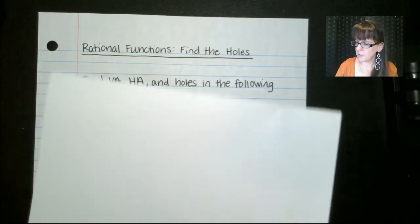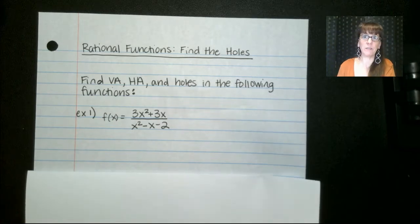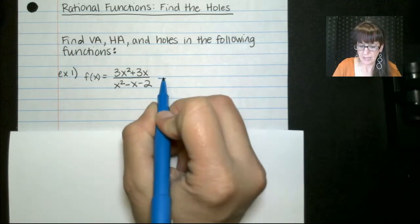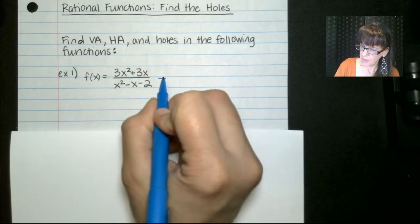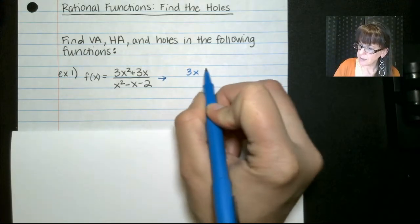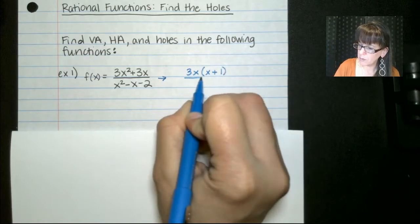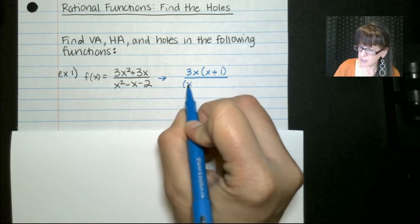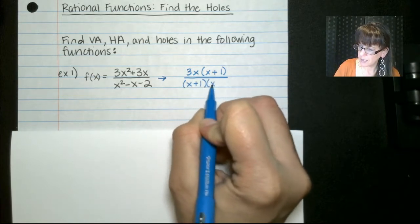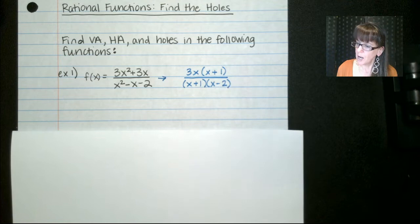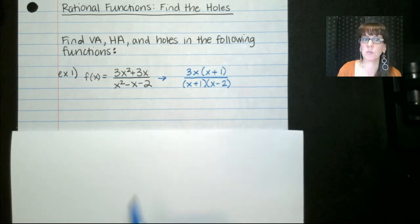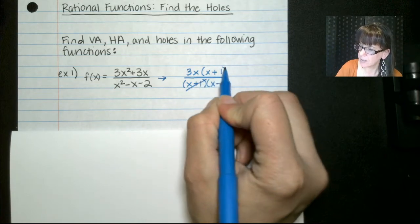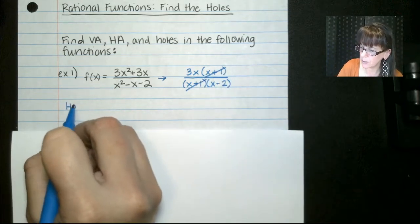Here is our first function. We're going to first factor, so let's go ahead and do that. And if we factor this guy, we end up with 3x(x+1) over (x+1)(x-2). So we do have a hole in this one. And that is that the x+1, we're going to be canceling that out. So our hole, here's how you find your hole.